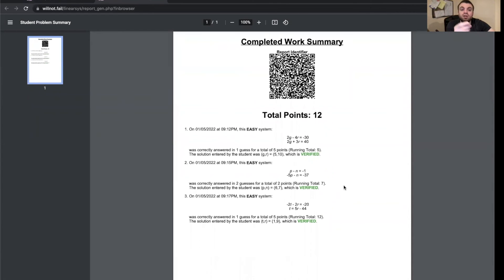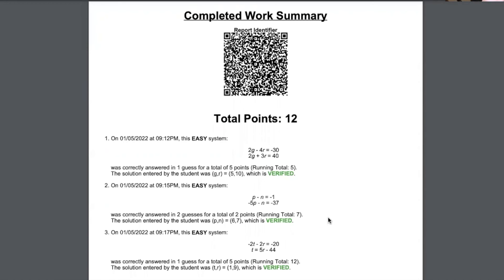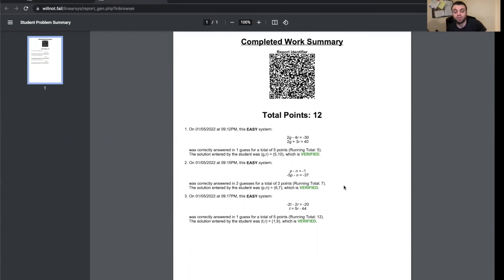When it's ready you're going to hit make report, and what that's going to do is create a report of the work that you have done. See, it says completed work summary, and it shows you the systems that you solved, the number of guesses that it took you, and it also shows you the solution that you entered and whether that is the actual solution. You can see that it double checked and all the solutions you entered are verified correct.